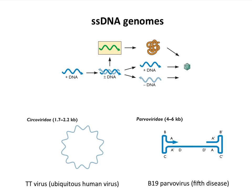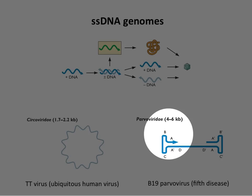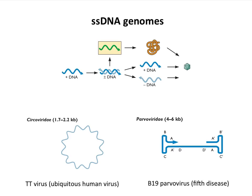The other genome configuration is shown by the parvoviridae — these have single-stranded linear DNA genomes. The ends are base-paired to form panhandle structures, which have a role in genome replication. An example is B19 parvovirus, which causes fifth disease — a childhood rash disease. It's called the fifth disease because it comes after measles, mumps, rubella, and chickenpox. If you have a dog, you have to immunize them against canine parvoviruses, otherwise you could lose them.